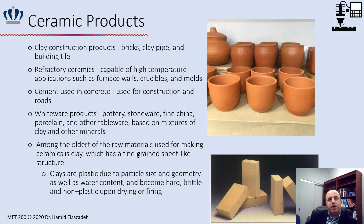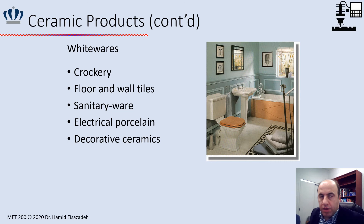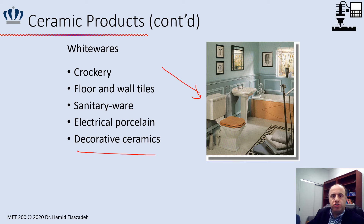Ceramic products include clay construction products such as brick, clay pipe, and building tile. Refractory ceramics are capable of high-temperature applications — for example, furnace walls, crucibles, and molds. Cement is another ceramic product used in concrete for construction and roads. Whiteware products — also called fine china or porcelain — are ceramic materials, as are floor tiles and electrical porcelain.